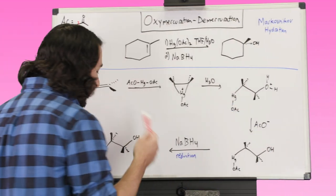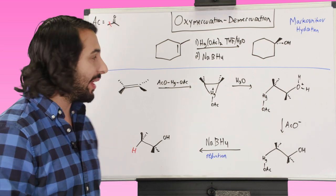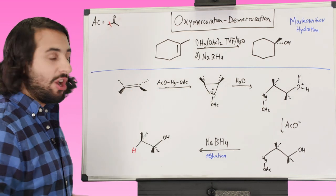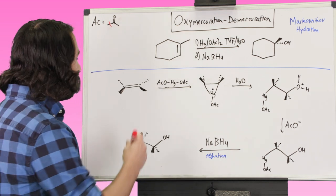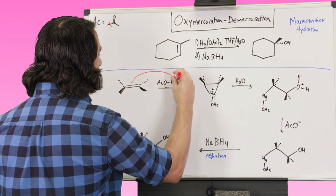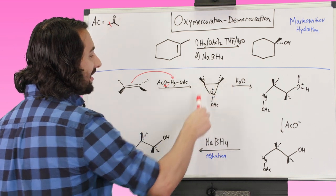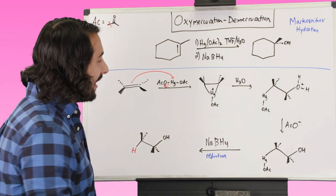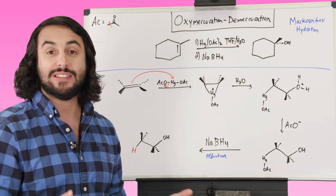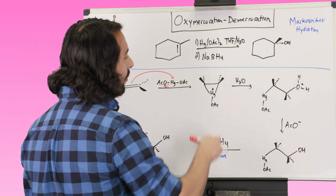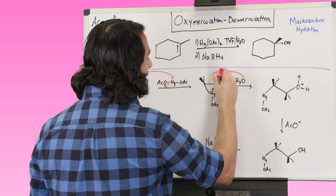Now let's look at the mechanism. This is where we're going to see that it's actually very similar to dihalogenation, or even more so halohydrin formation. We have this alkene — we're looking at it edge on. By now we know that pi bonds can behave nucleophilically, so that can go ahead and interact with this electron-deficient mercury atom and kick off one of those acetate groups. That is going to give us this mercurinium ion intermediate. If you imagine this is just a bromine atom, we would have our bromonium intermediate, just like in dihalogenation or halohydrin formation.